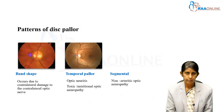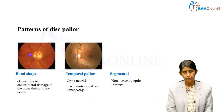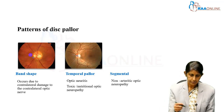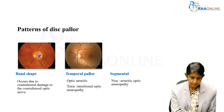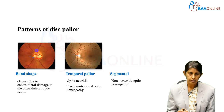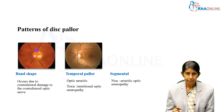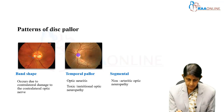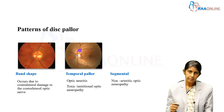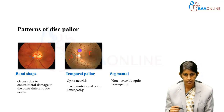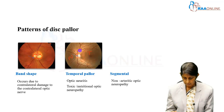The patterns of disc pallor are described in these photos. One pattern is band-shaped or pan-shaped optic atrophy — this band is what we are looking at, and it can occur due to contralateral damage to the optic nerve. Temporal pallor, seen on the temporal side of the disc as opposed to the nasal side, is seen typically in patients with optic neuritis or nutritional optic neuropathy. Segmental pallor is a classical feature of non-arteritic ischemic optic neuropathy.